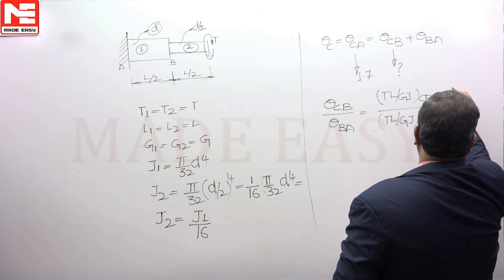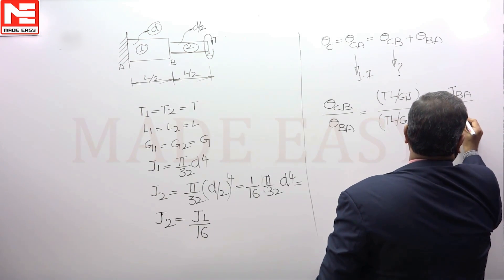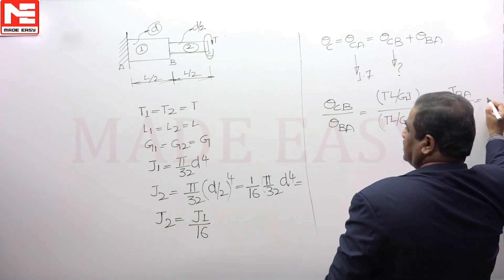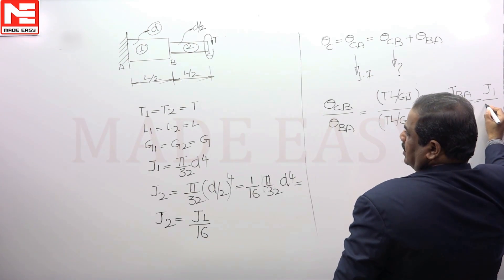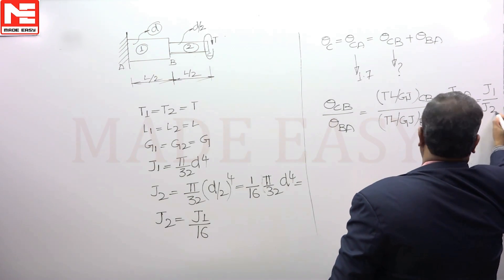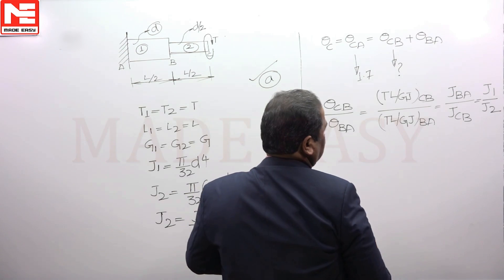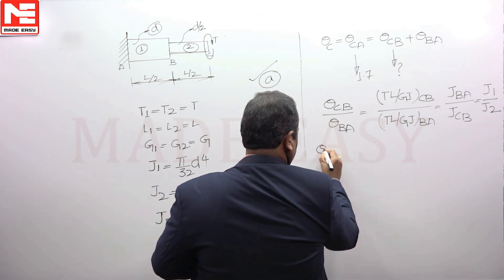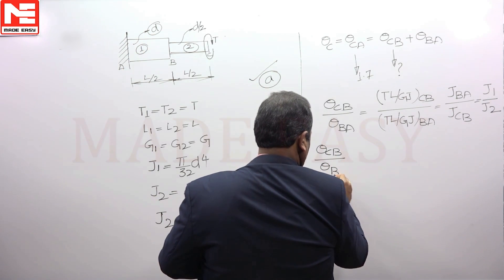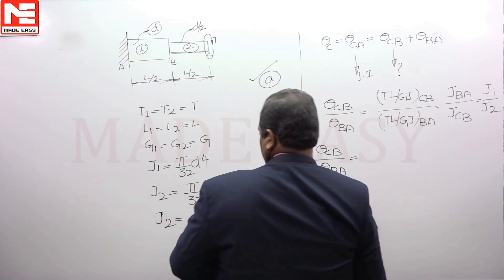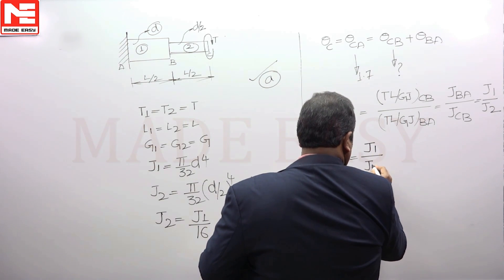Since torque T and length L are the same for both portions, the ratio simplifies to J of BA divided by J of CB. J of BA is J1 and J of CB is J2. So the ratio of theta CB to theta BA equals J1 by J2. Since J2 equals J1 by 16, this ratio becomes 16.